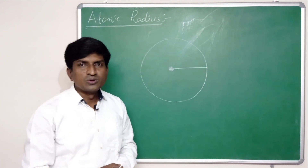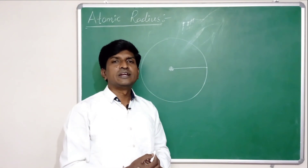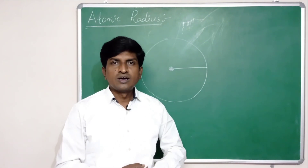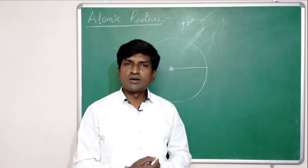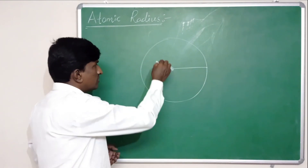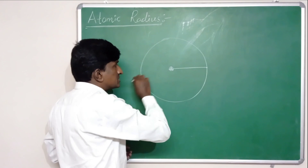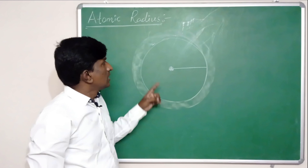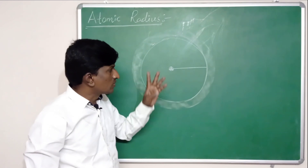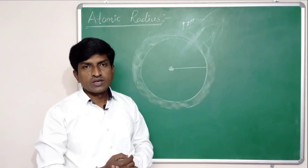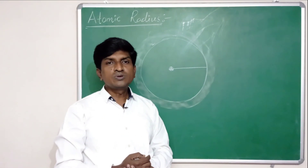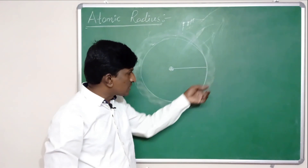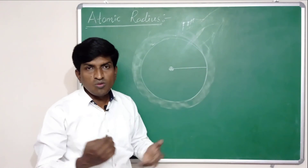However, it is not possible to determine the atomic radius of an isolated atom, because according to the quantum mechanical model of an atom, the electron is not revolving in a fixed orbit — it revolves in a particular region around the nucleus. Due to this, it is not possible to determine the exact borders of the atom.